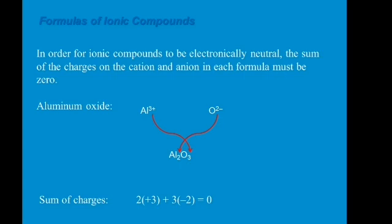We have here an example: aluminum oxide, from the two elements — aluminum and oxygen. Aluminum has a charge of 3+, and oxygen has a charge of 2−. So these are the charges of aluminum and oxygen.